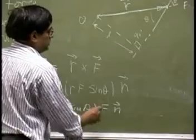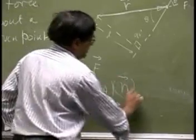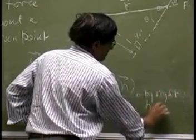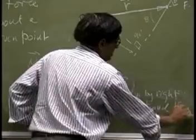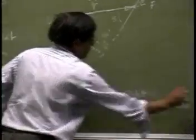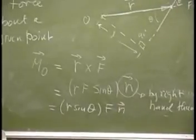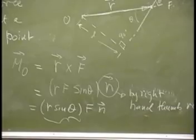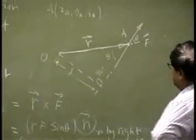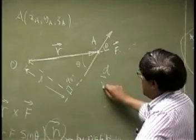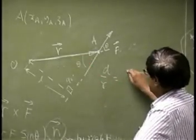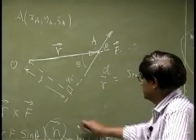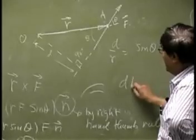This is defined by right hand thumb rule. So let's look at this part here which is R sine theta. If I go back to the triangle here to see, D over R, this over this, is sine theta.